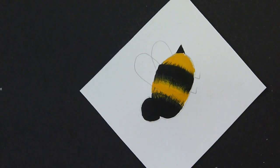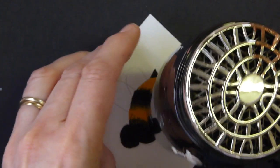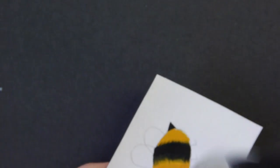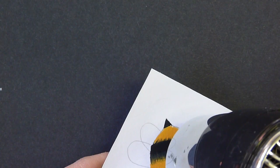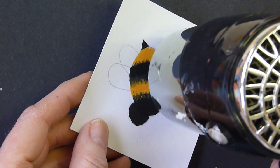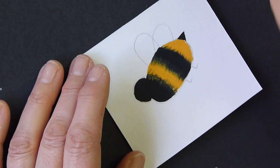What we can do now is just dry that with a hairdryer. So we need to add the wings back in.